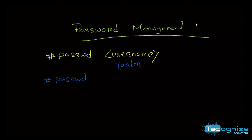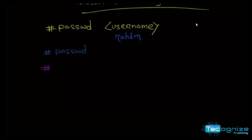When you look at the root, when you set the password, you can set the password. If you set the password, let's say for example, you can set the password. When you set the password, you set the password if you set the password — this covers the expiry scenario.